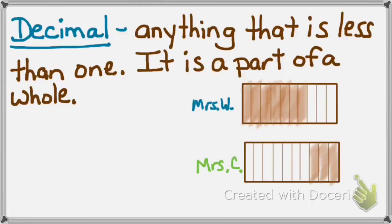How much chocolate bar do I have left? Let's count my little pieces: one, two, three, four, five, six, seven. I have seven tenths of a chocolate bar left. Looking at just my chocolate bar, do I have a whole chocolate bar? No. I have zero whole chocolate bars and seven tenths. It takes ten pieces to make a whole and I have seven of them.